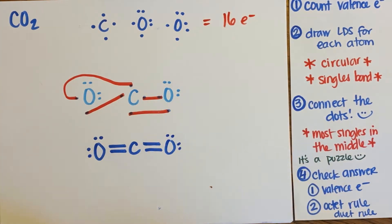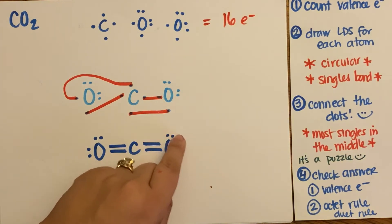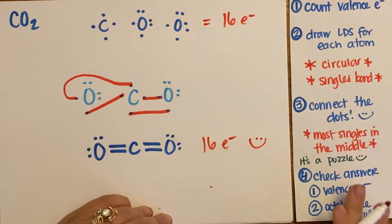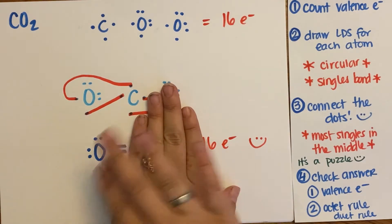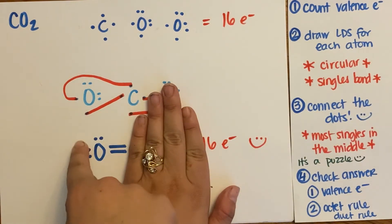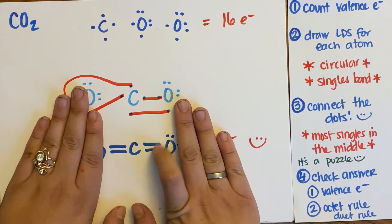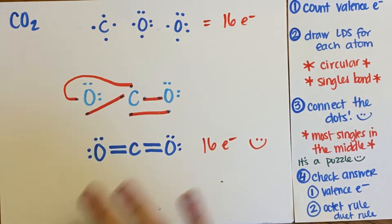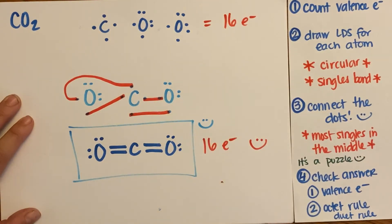And now we check our work. So did I actually end with 16 electrons? Let's count them up. One, two, three, four, six, eight, 10, 12, 13, 14, 15, 16. And let's make sure our octet rules are satisfied. So ignore everything else. We'll check this oxygen - two, four, six, eight. Carbon has two, four, six, eight. And this oxygen has two, four, six, eight. So everybody's happy and satisfied. Octet rules are correct. This is the Lewis dot structure for it.